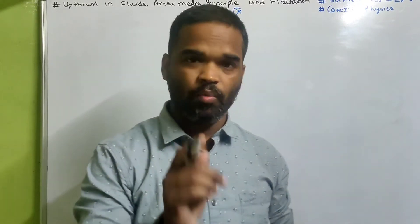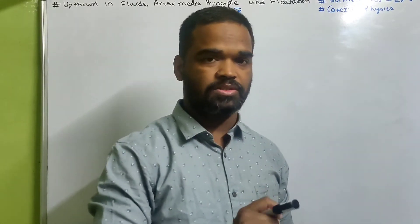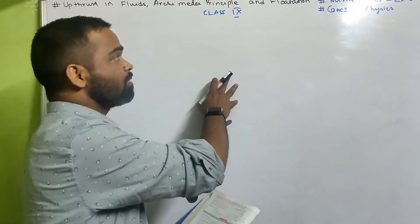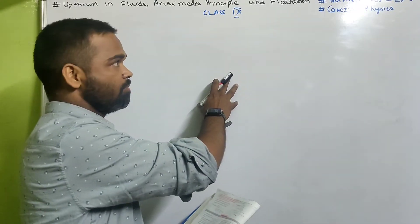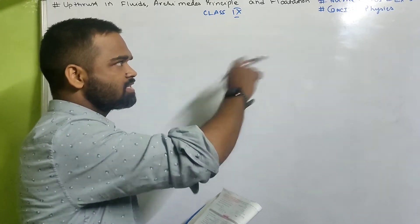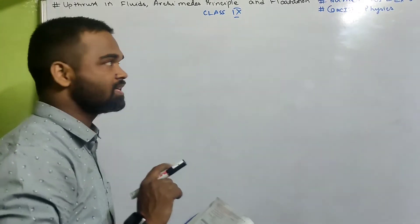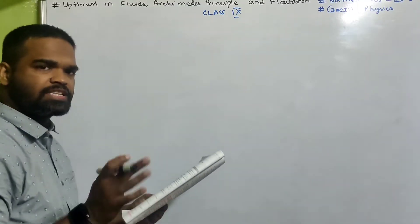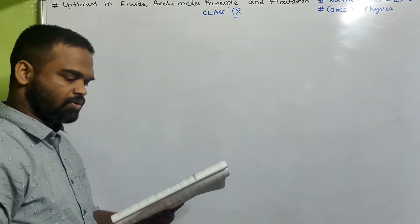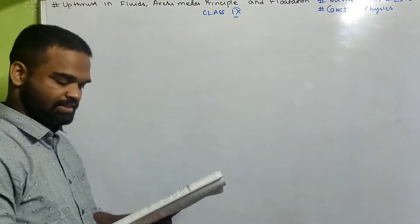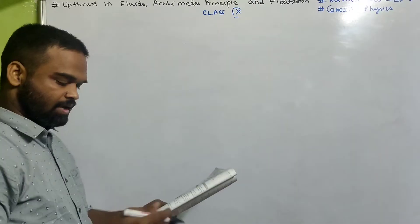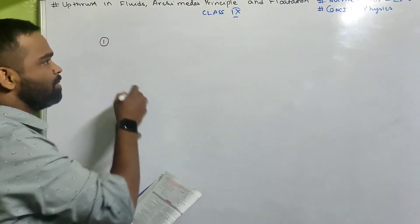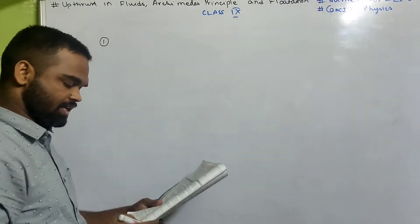Hi kids, in this video we will solve numericals from Aptras in Fluid, Archimedes Principles and Flotation. This is exercise 5B from Concise Physics Class 9. I have already explained part B — you can click on the I button and get the link. Let us start with numericals from exercise 5B, Concise Physics.